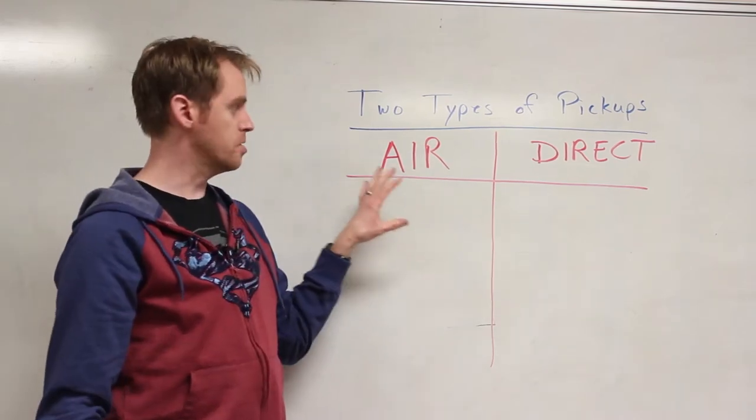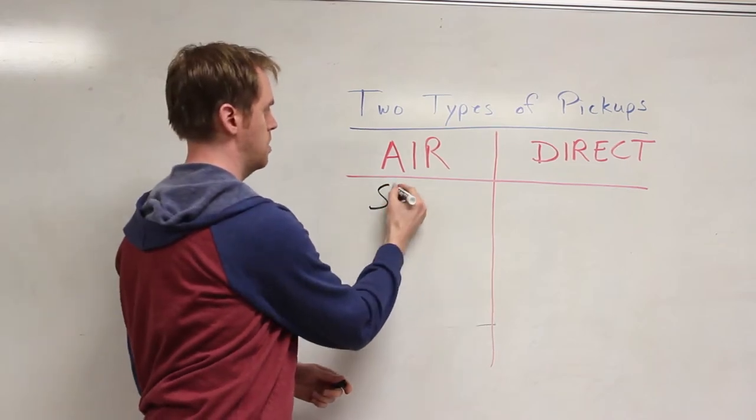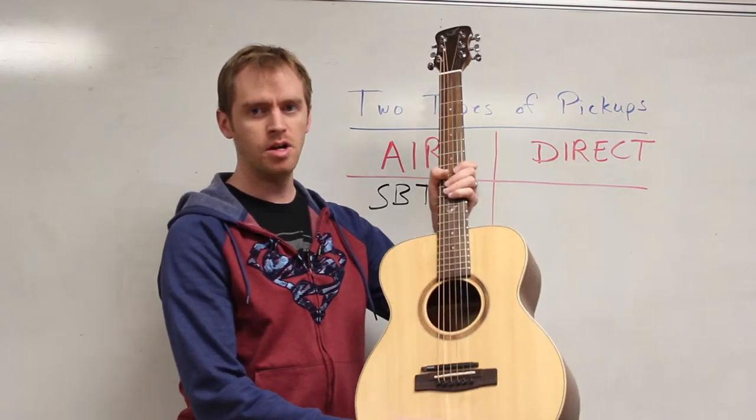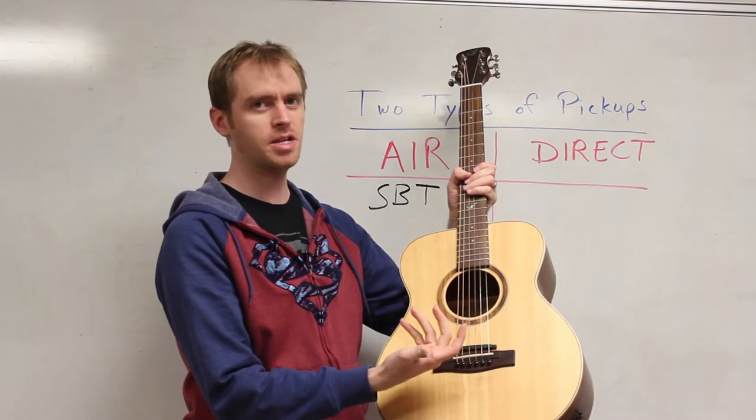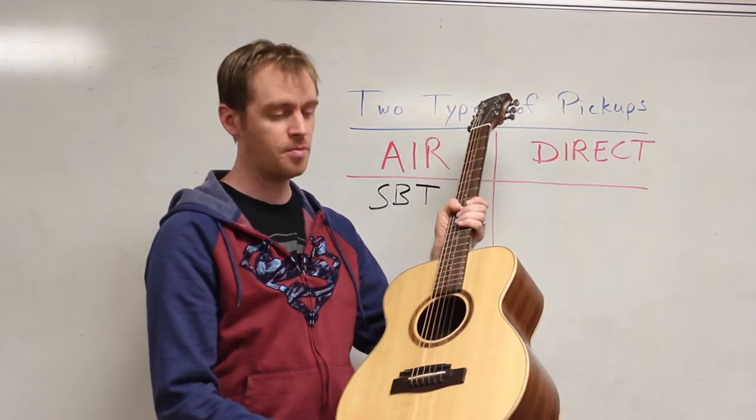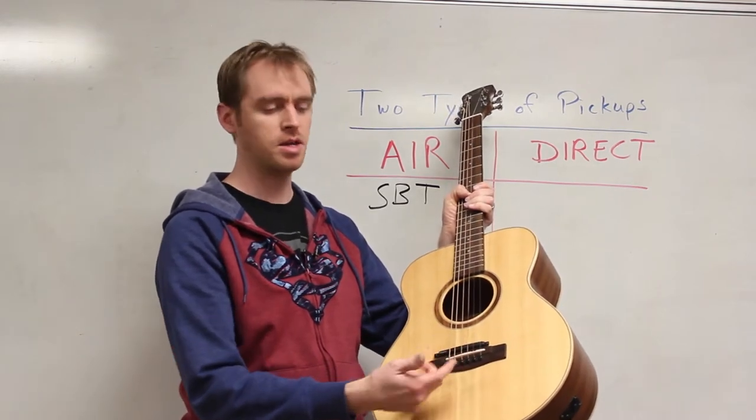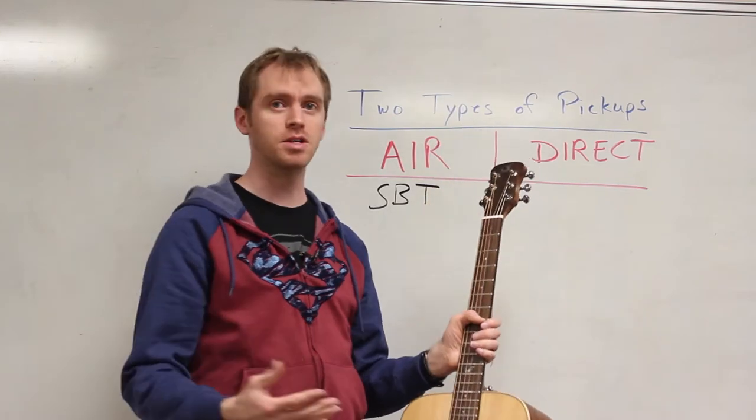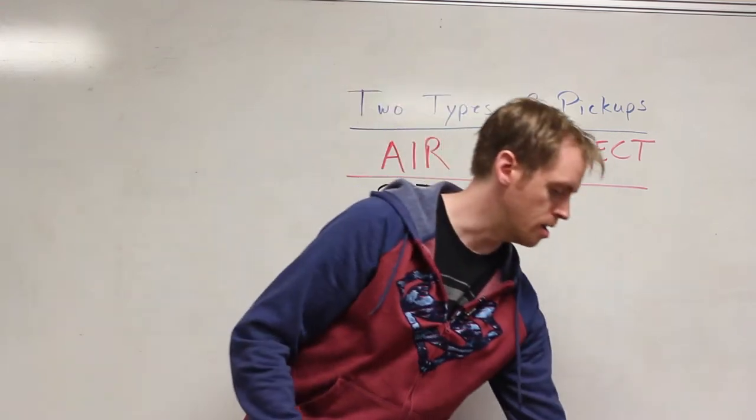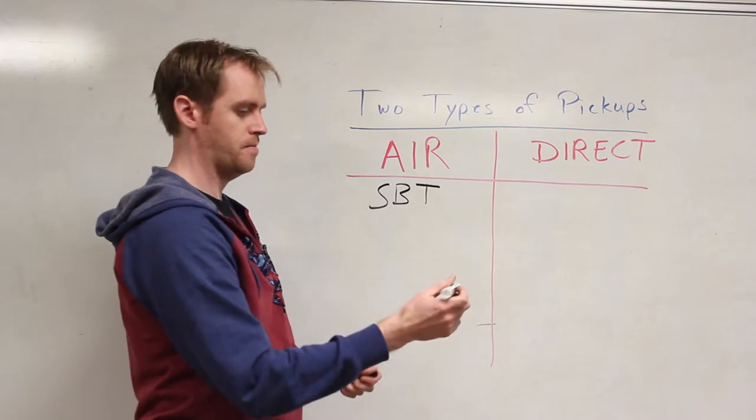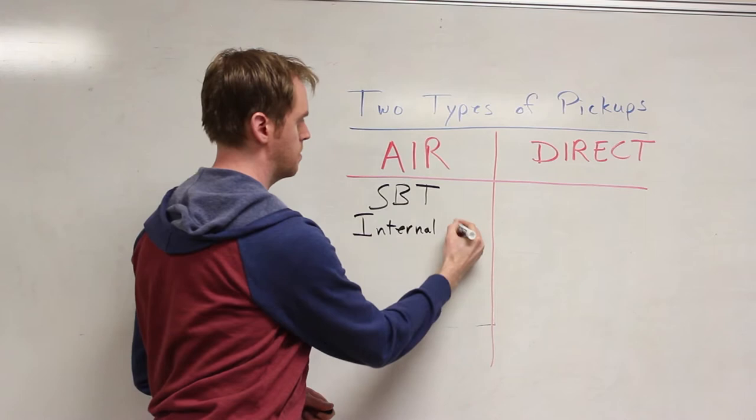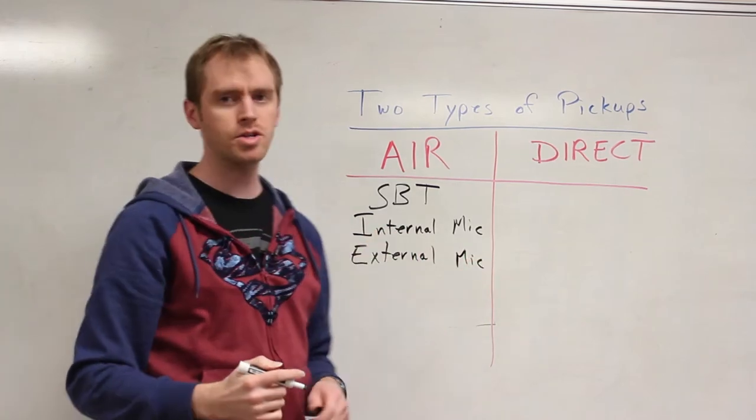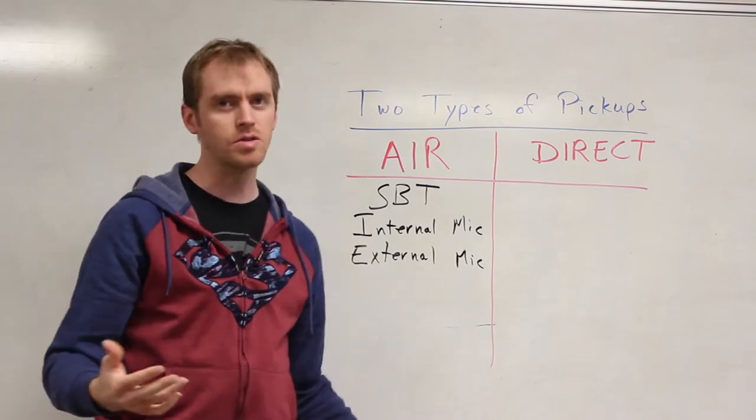I want to go over the types of pickups that fall into each category. We're going to start with looking at the air category. The first type of pickup is a soundboard transducer. This is a pickup that attaches somewhere onto the top of the guitar, on the inside of the guitar usually. Like a K&K pickup, which are very popular. Those stick onto the bridge plate inside the guitar, kind of under the bridge here. That's grabbing that vibration from the top of the guitar. And people like them because it has a nice airy sound, a more natural sound.